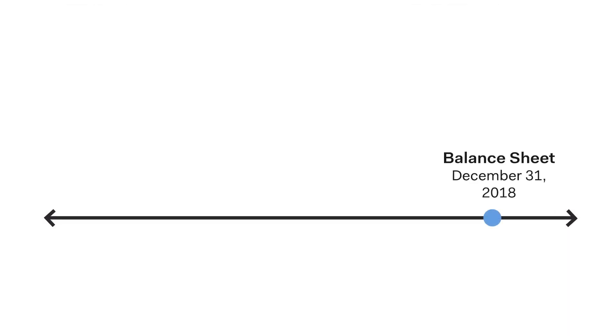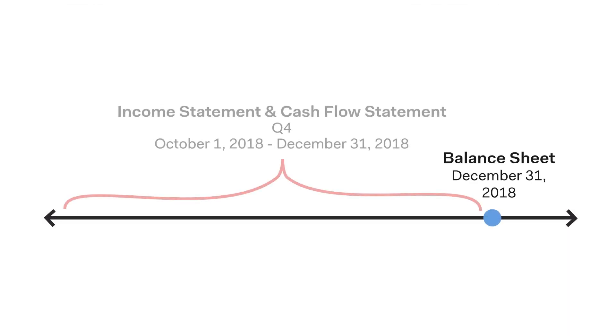Unlike the balance sheet, which is point in time, the income statement covers a period of time, often an entire year or just a quarter. The income statement contains information about a company's net income in addition to information about both revenue and expenses. Now let's jump into how to read an income statement.